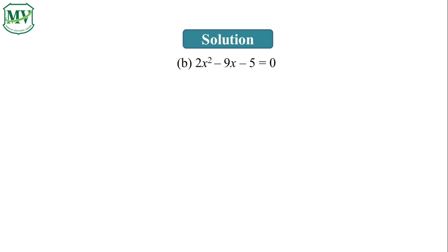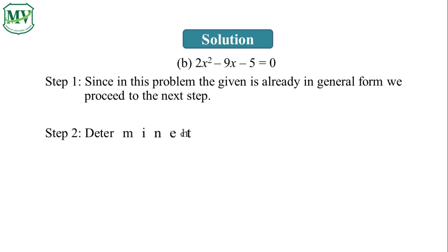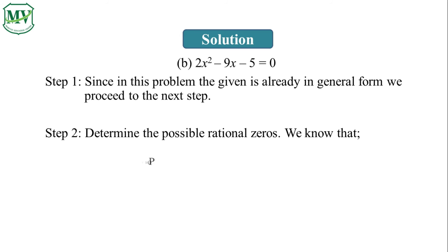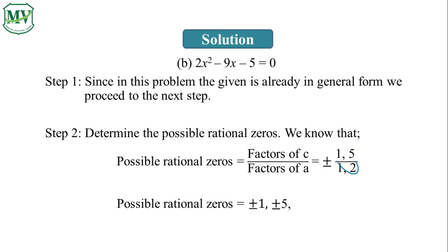Let's proceed to letter B. Since the given is already in general form, we proceed to the next step, which is to determine the possible rational zeros. We know that the factors of c are over the factors of a. We have 1 over 1, that is positive or negative 1; 5 over 1, that is positive or negative 5; 1 over 2, that is positive or negative one-half; and 5 over 2, that is positive or negative 5 over 2. All these are the possible rational zeros of the given equation.